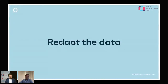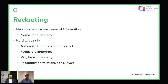One solution is to try to redact the data — remove key pieces of sensitive information like names, race, or age. It's really hard to do this right. If you use an automated method, automated methods are imperfect, and if you miss even one bit of information, it's now in there as a feature subject to a prediction attack. Even if you use people to do the redacting, people aren't perfect either, and it's hugely time consuming. That is a very challenging solution.